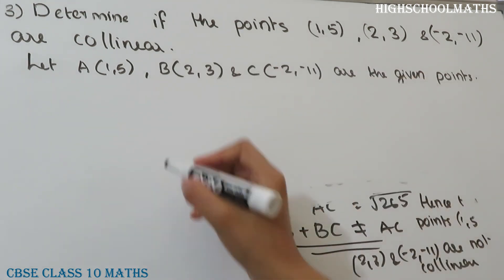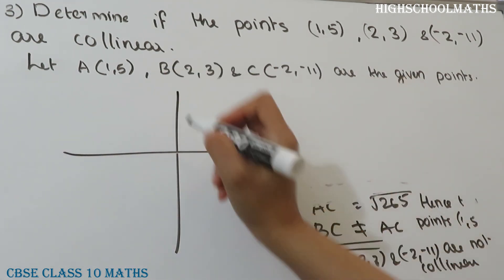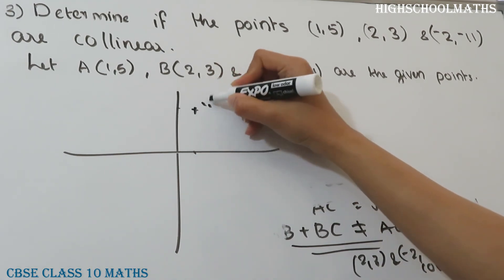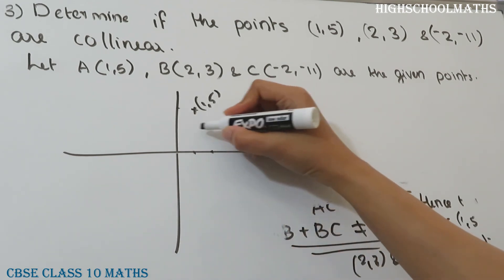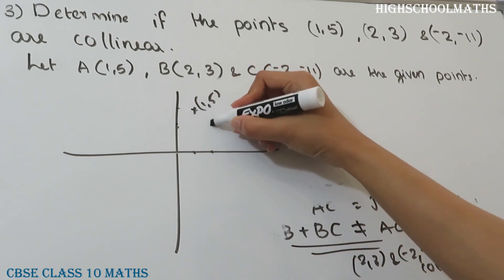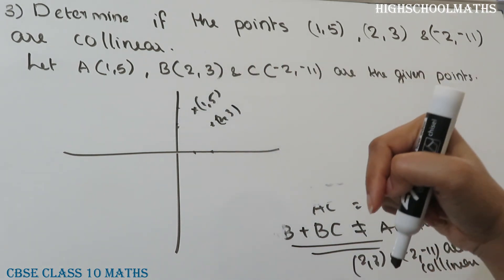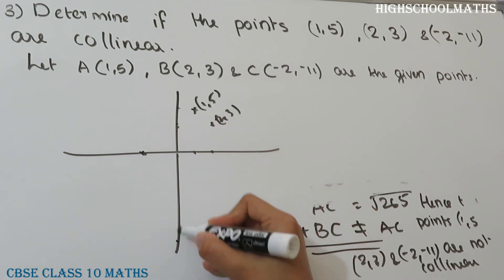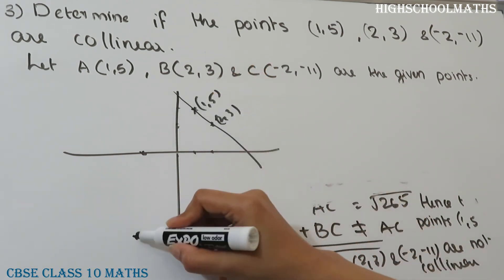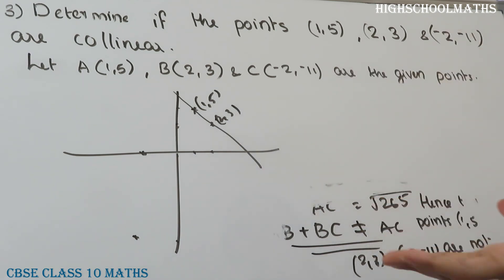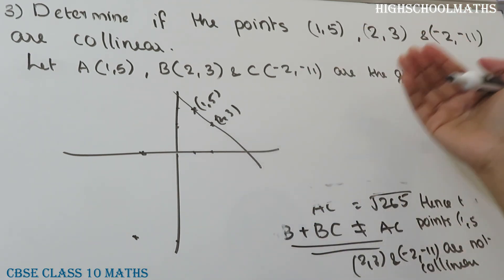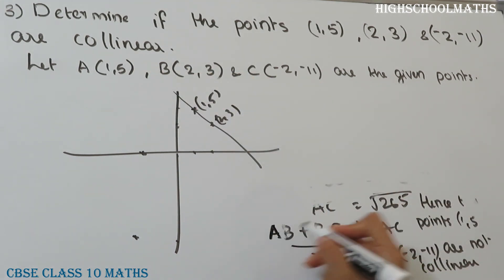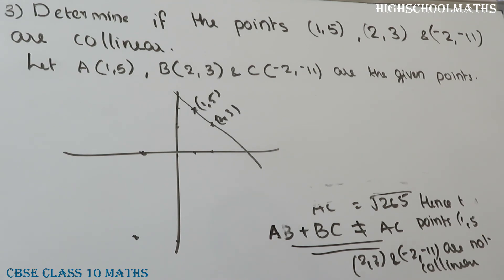Now let's plot the points. We have (1,5) here, (2,3) here, and (-2,-11) here on the coordinate plane. Since AB plus BC is not equal to AC, this is not a straight line and these are not collinear points. Please share the video with your friends and don't forget to subscribe.